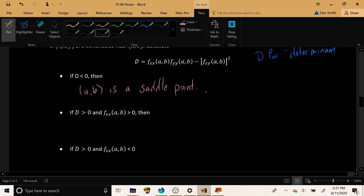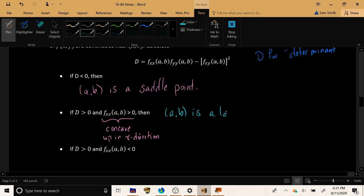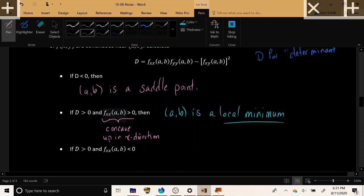All right, the next thing that we're going to check is, is that number D positive? And if so, take a closer look at the second derivative in the x direction. If capital D is positive, and the function is concave up in the x direction, this is a mnemonic that I use, concave up in the x direction. Then just as in the single variable case, we're going to get a local minimum at the point (a,b).